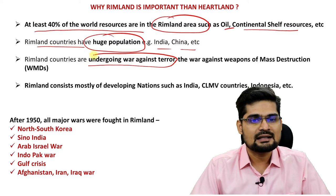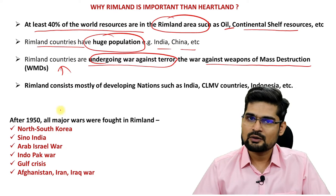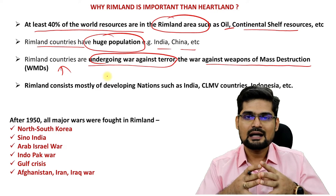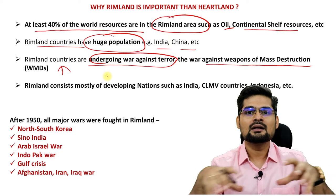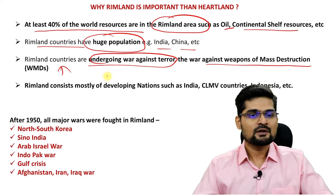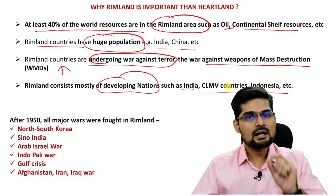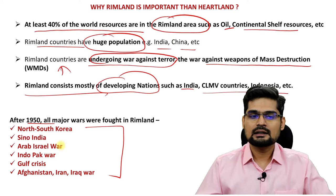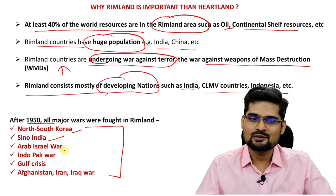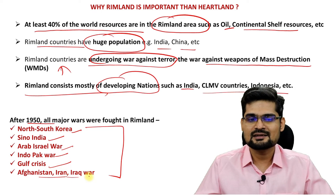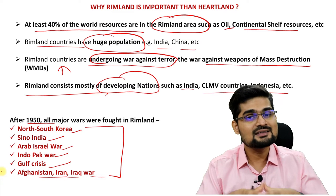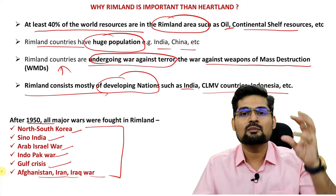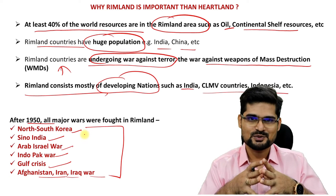Rimland countries are undergoing wars against terror and weapons of mass destruction. These countries are having different conflicts and wars, and that's where consolidation is required. If some power can consolidate them and achieve such agglomeration, they will be world leaders. After 1950, all the major wars — North-South Korea, Sino-India, Arab-Israel war, Indo-Pak war, Gulf crisis, Afghanistan, Iraq-Iran war — are in rimland parts only. You can observe how relevant rimland theory sounds in today's world.